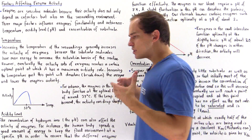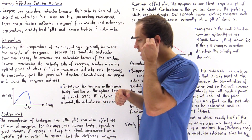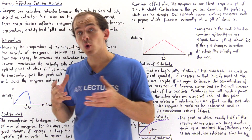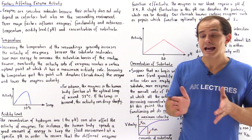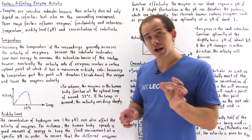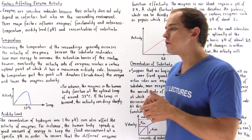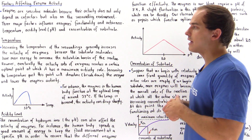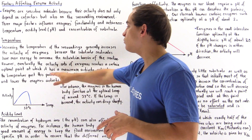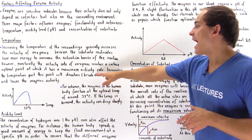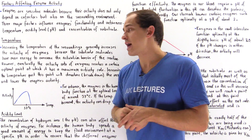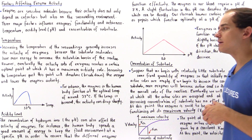The problem with continually increasing the temperature is that our proteins have tertiary structure, and at a high enough temperature the protein's tertiary structure can break down. At this point we say the protein is denatured and it no longer functions, because the tertiary structure determines the functionality of that protein. Eventually the rate of activity reaches a maximum, and increasing temperature past this point will denature the enzyme and lower its activity sharply.